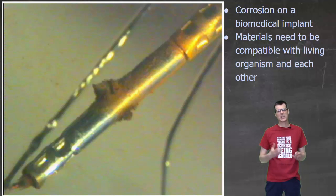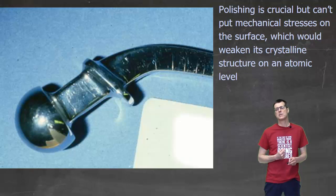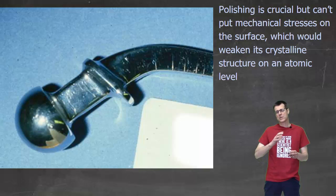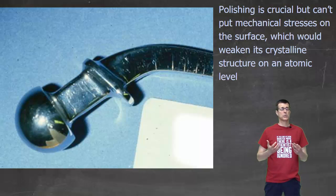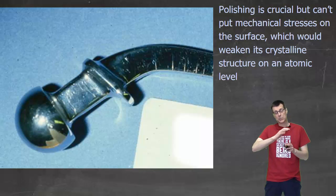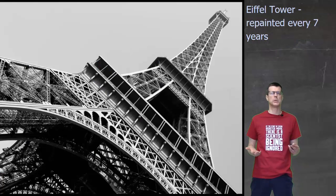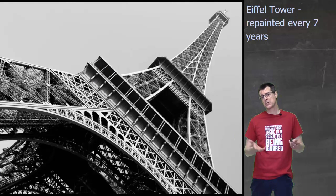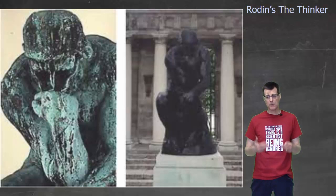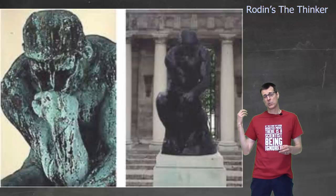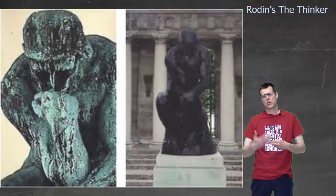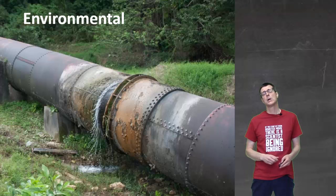This is from a biomedical implant — you can see a little bit of rust forming on it, and if that's in a living organism, that's really undesirable. This is an artificial hip, and in order for it to move well, the surface has to stay really clean, so any corrosion on that would cause serious problems. But if you were to start sanding and polishing it, you would actually, at the atomic level, start to weaken the surface, so they have to be very careful. Corrosion is also a cultural issue — things like the Eiffel Tower or Rodin's The Thinker are made of materials that corrode, and every once in a while they go through a restoration process.